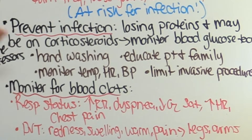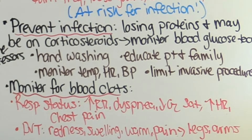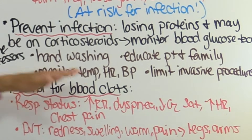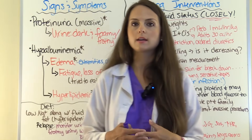Monitor for blood clots, as patients are losing proteins that prevent clot formation. Watch respiratory status — increased respiratory rate, difficulty breathing, decreased oxygen saturation, and chest pain can be signs of a pulmonary embolism. Also assess extremities for deep vein thrombosis: look for red, warm, swollen, painful areas in the legs or arms, and notify the doctor if found so they can confirm the diagnosis.